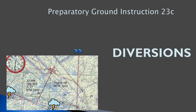Hello everyone. Welcome back to freepilotgroundschool.ca. This is our PGI — our preparatory ground instruction — for exercise 23, diversions. We split up navigation into three different preparatory ground instructions. So we're going to learn how to do a diversion.